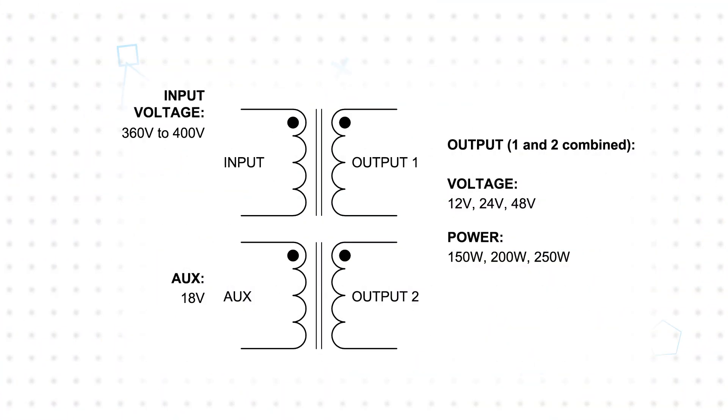The transformers include two output windings intended to be used in parallel, delivering output power from 150 to 250W. They also include an auxiliary winding that produces an 18V output that provides power and a timing synchronization signal to the controller that needs to be in tune with the transformer.